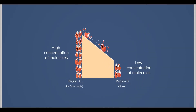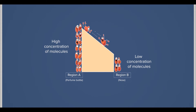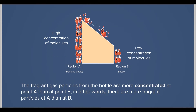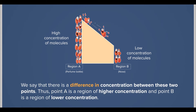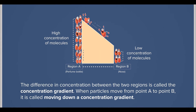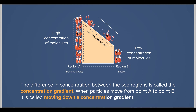Let's label the opening of the perfume bottle as point A, and label your nose as point B, some distance away from the perfume. The fragrant gas particles from the bottle are more concentrated at point A than at point B. In other words, there are more fragrant particles at A than at B. We say that there is a difference in concentration between these two points. Thus, point A is a region of higher concentration, and point B is a region of lower concentration. The difference in concentration between the two regions is called the concentration gradient. When particles move from point A to point B, it is called moving down a concentration gradient.